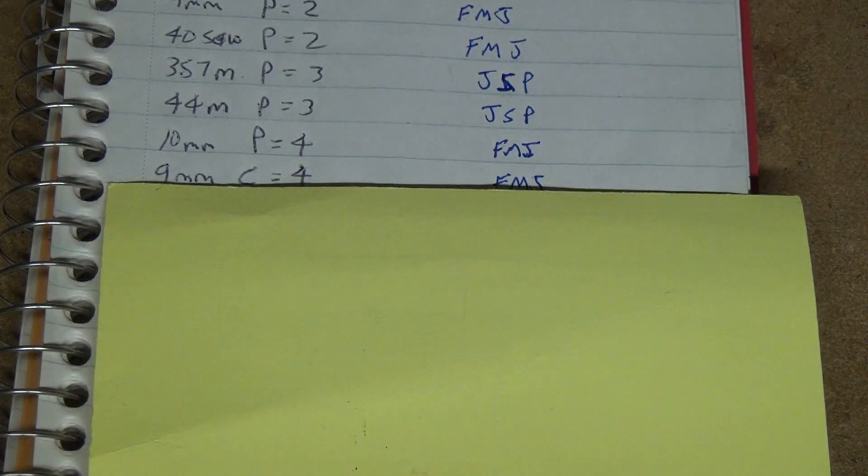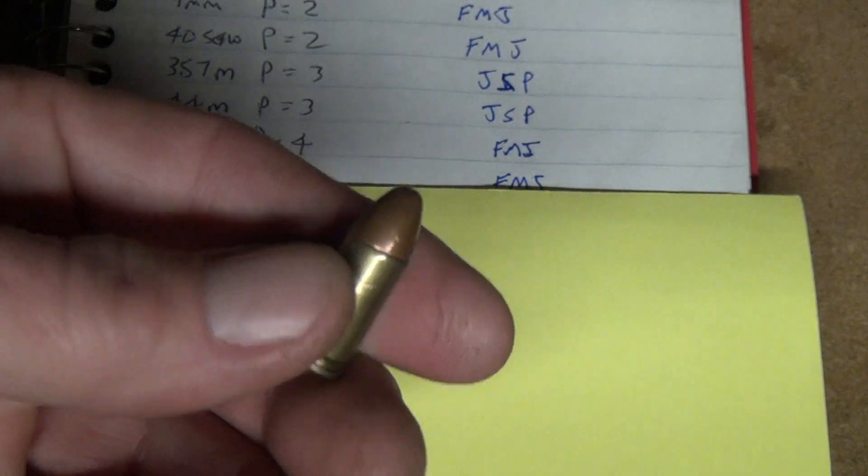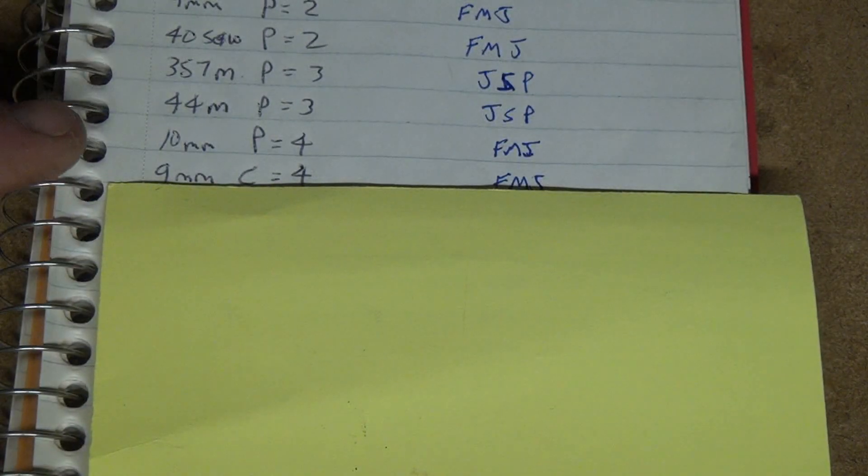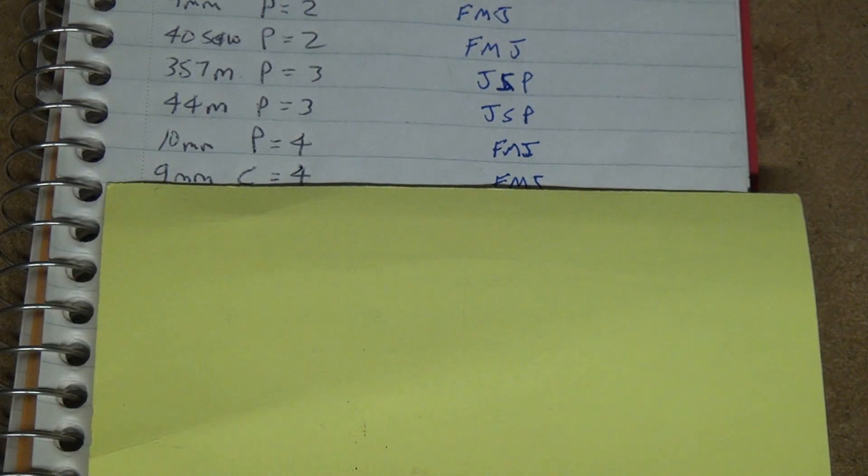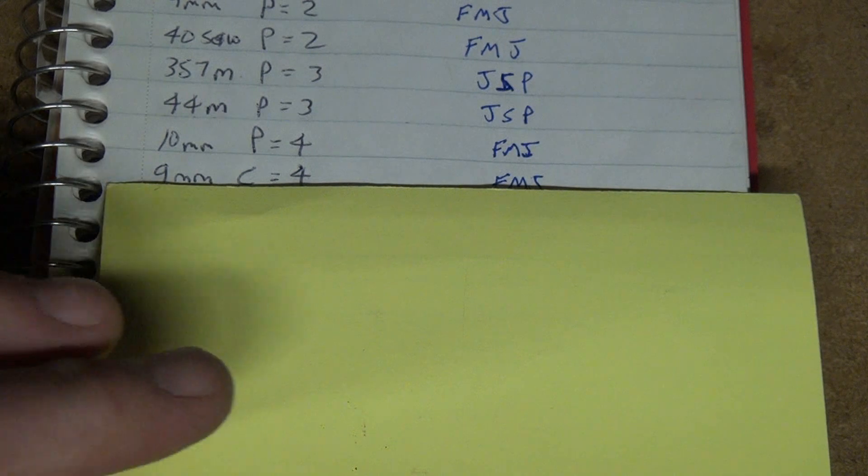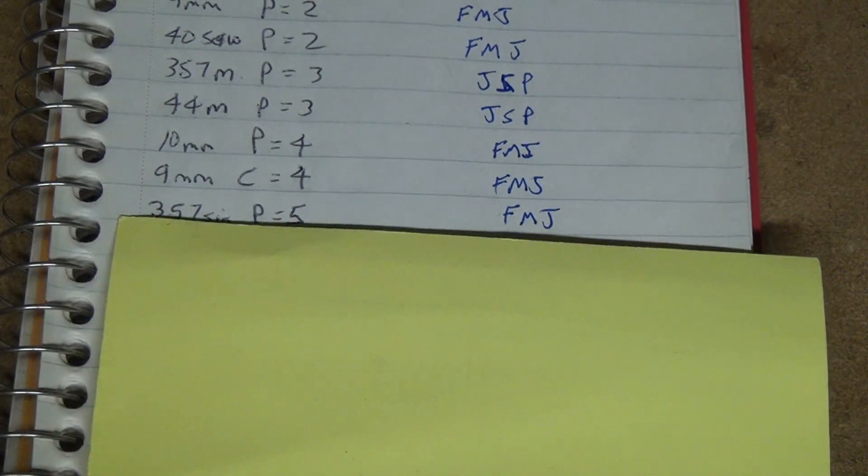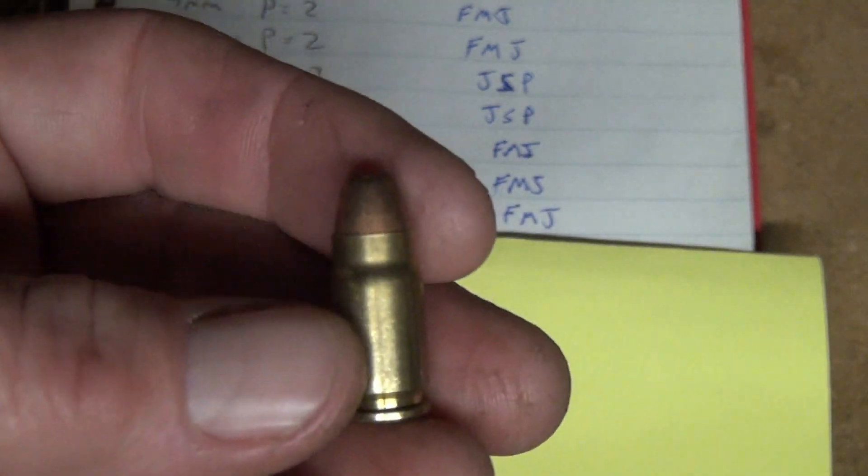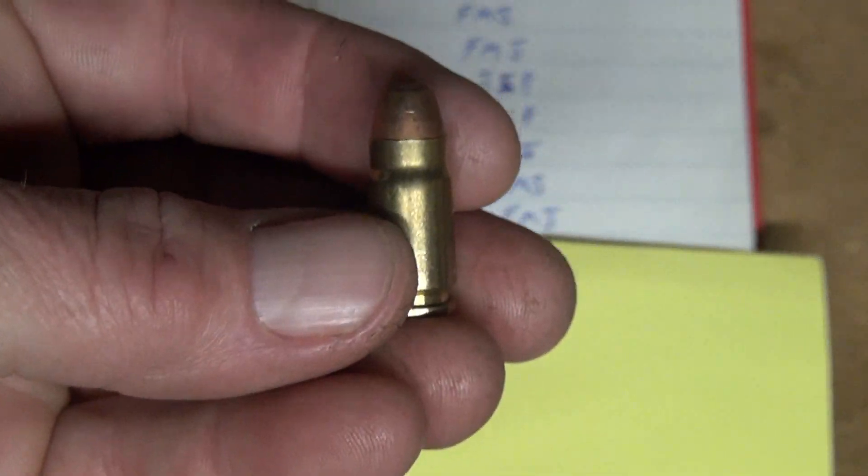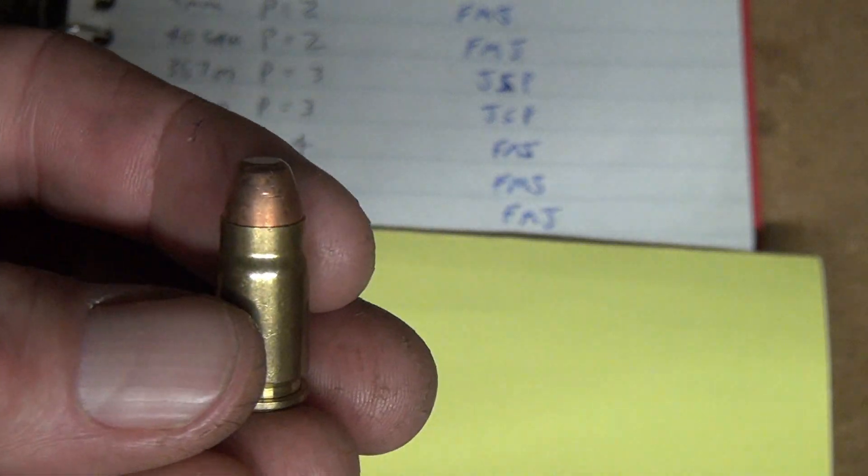After that was the 9mm carbine, coming out of a carbine. I knew the carbines would do better. That also went through four layers, so same as the 10mm pistol. But this next one is the one that really surprised the crap out of me. And that was the .357 SIG full metal jacket. For the standard pistol rounds, this actually went through the most: five layers of Kevlar.